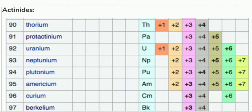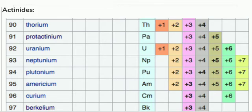That is why, when you look at this chart, you can see that the number of oxidation states exhibited by actinides is larger. Elements such as neptunium, plutonium, and americium are able to exhibit the plus 7 oxidation state. Elements like uranium, neptunium, plutonium, americium, and curium exhibit plus 6. Elements from atomic number 91 to 95 exhibit plus 5, and plus 4 and plus 3 are common.